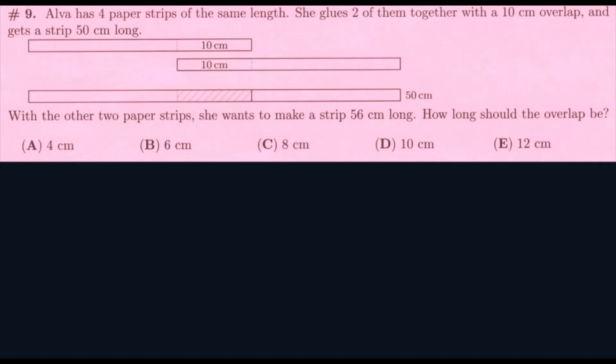Paula has four paper strips of the same length. She glues two of them together with a 10 centimeter overlap and gets a 50 centimeter long strip. So, with the other two paper strips, she wants to make a 56 centimeter long strip. How long should the overlap be? So, what we can do for this question is, if this is a 10 centimeter overlap, that would be only 10 centimeters in the middle. So, and she said it was a total of 50 centimeters, that strip. So, we can do 50 minus 10 and get 40. And, because it was two strips, we can divide that by two and get 20 and we will get that it's the rest of it on both sides is 20. And, because we have to add the 10 that was overlapping, we would get a strip is 30 centimeters long.